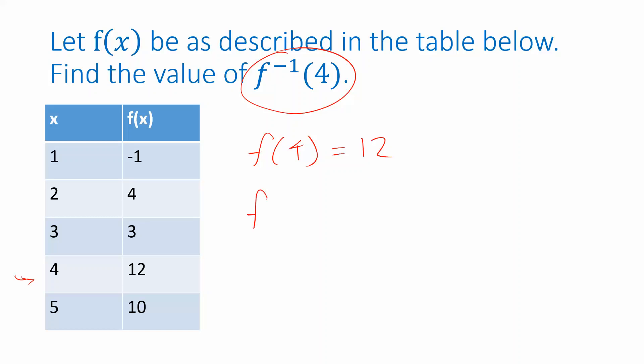f inverse of 4 switches this around. Instead of asking what happens when I plug in a 4, it asks me what number should I plug in in order to get out a 4. And so I can see that from the table, because I get out of 4 when I plug in a 2.